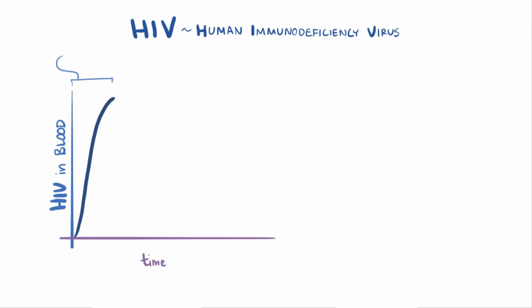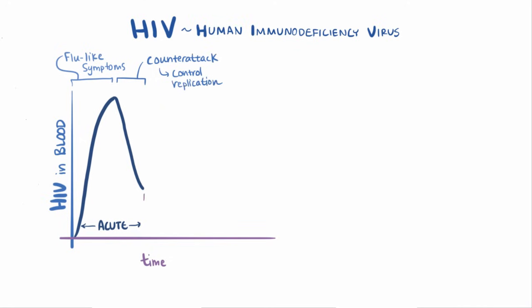Patients typically experience flu-like or mononucleosis-like symptoms during the acute infection. In response, the immune system mounts a counterattack and starts to control the amount of virus replication, and the amount of virus in the blood declines to lower but still detectable levels by 12 weeks, at which point the patient enters the chronic or clinically latent phase, which can last between 2 and 10 years.